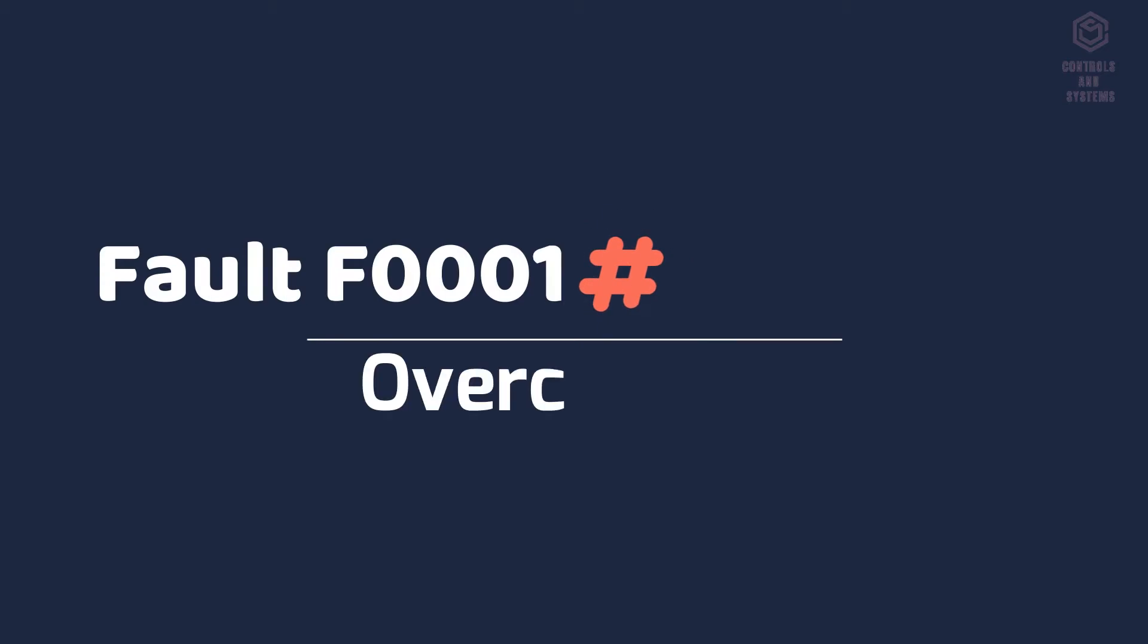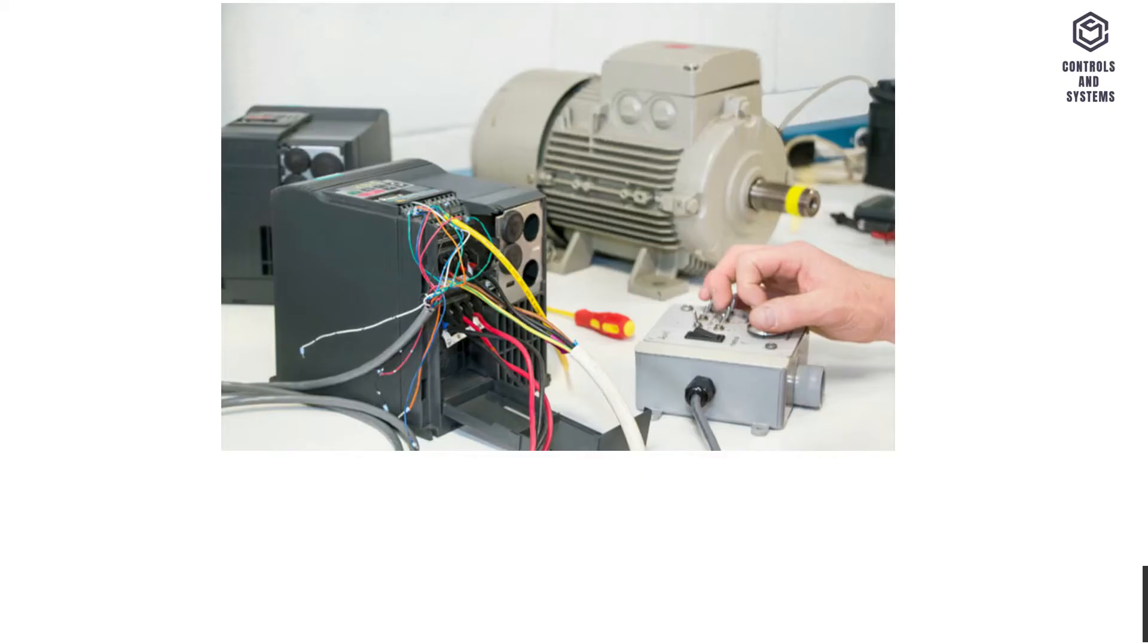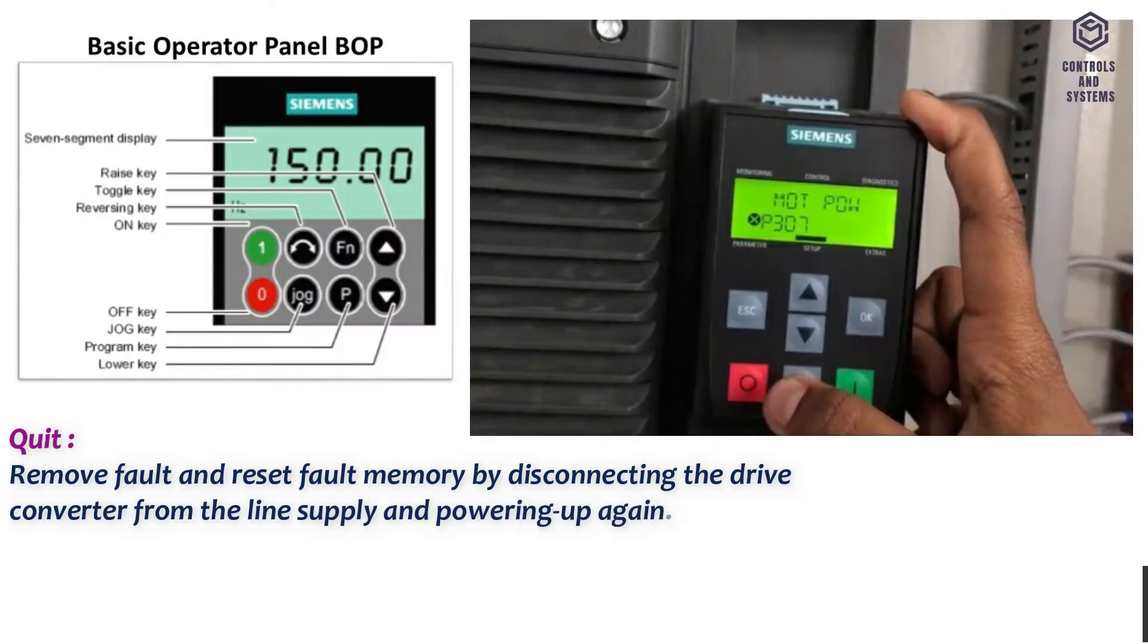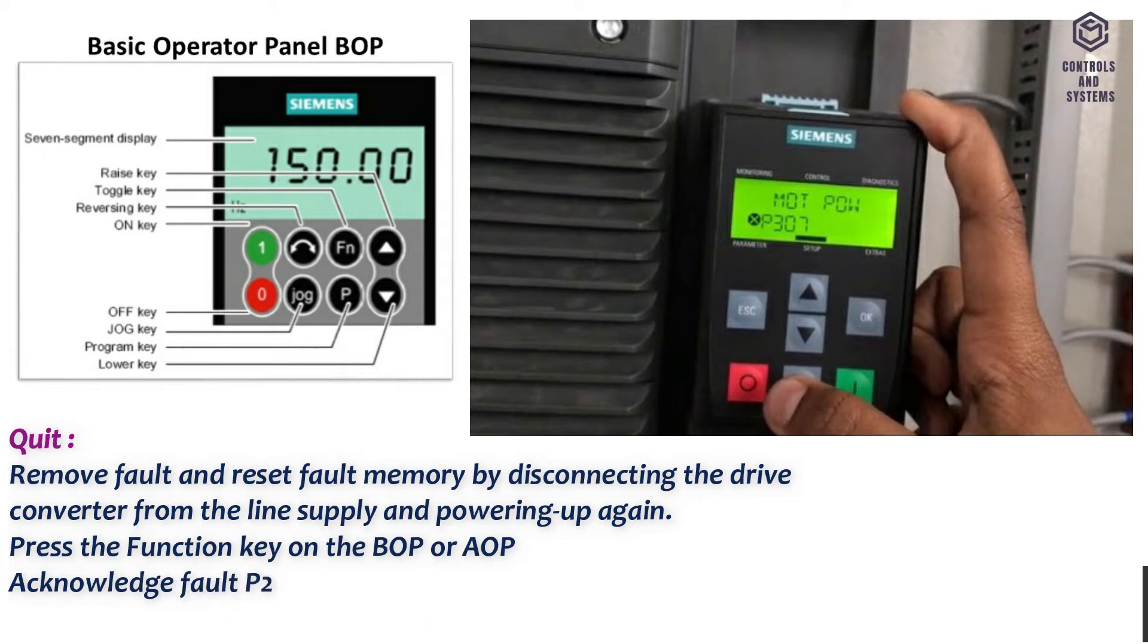Fault F0001, overcurrent. Quit: Remove fault and reset fault memory by disconnecting the drive converter from the line supply and powering up again. Press the function key on the BOP or AOP. Acknowledge fault P2103, P2104, P0952, complete fault memory.